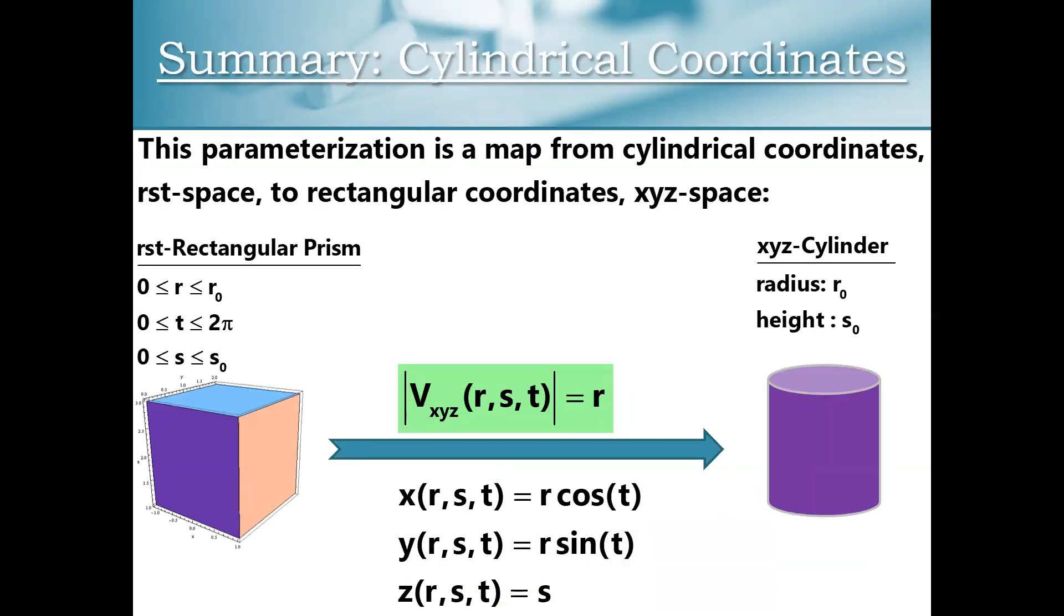So here's my summary. Just to remind you here, if you can parameterize a region, you could probably integrate over it. And if you can parameterize a region, you have a map from an RST rectangular prism to an XYZ cylinder, hence the name cylindrical coordinates. And hence, we can now do some interesting integration problems using cylindrical coordinates.